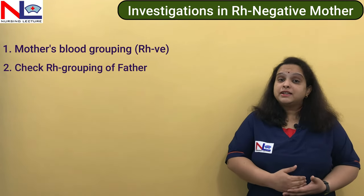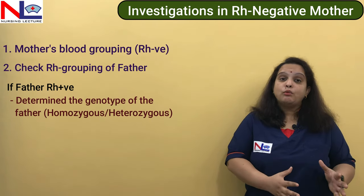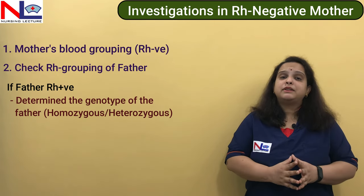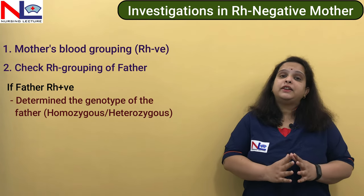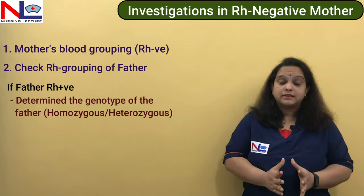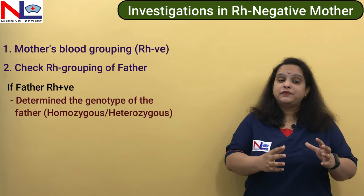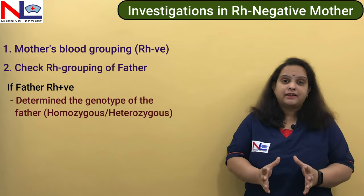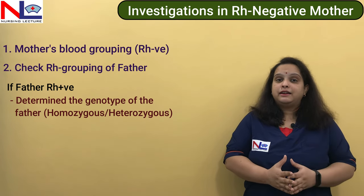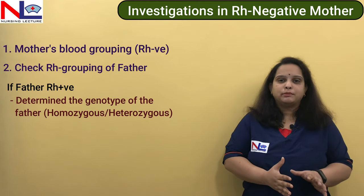But if the father is Rh-positive, we can determine whether he is homozygous or heterozygous. In a homozygous father, 100% of fetuses will be Rh-positive and incompatibility will 100% arise. But if he is heterozygous, there is only a 50% chance of incompatibility, because if the fetus is Rh-negative it will be compatible with the mother and incompatibility will not arise.